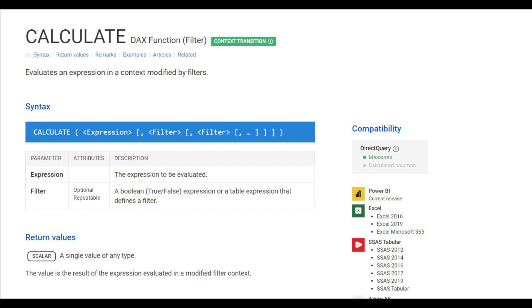Now we are going to look at another DAX function which is USERELATIONSHIP, which can be used to access inactive table relationships inside of CALCULATE. We are going to look at an example where we created an inactive relationship and see how CALCULATE and USERELATIONSHIP can be used to make that relationship active without going into the data model and doing that physically.